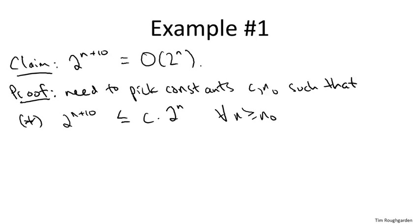So unlike the first basic example where I just pulled the two constants out of a hat, let's actually start the proof and see how you'd reverse engineer the suitable choice of these two constants. So what a proof would look like, it would start with two to the n plus ten on the left hand side, and then there'd be a chain of inequalities terminating in this c times two to the n.